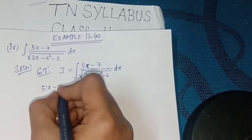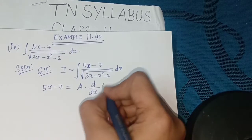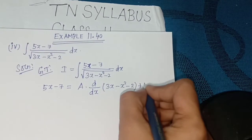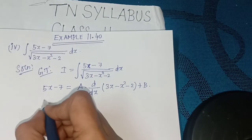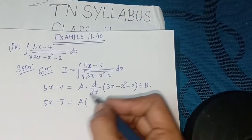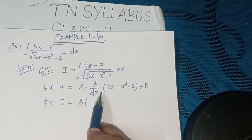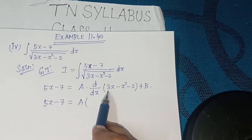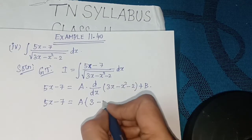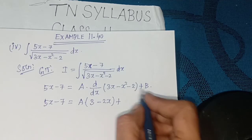Solution: Given I = ∫(5x - 7) / √(3x - x² - 2) dx. We write 5x - 7 = a · d/dx(3x - x² - 2) + b. Differentiating: d/dx(3x - x² - 2) = 3 - 2x. So, 5x - 7 = a(3 - 2x) + b.